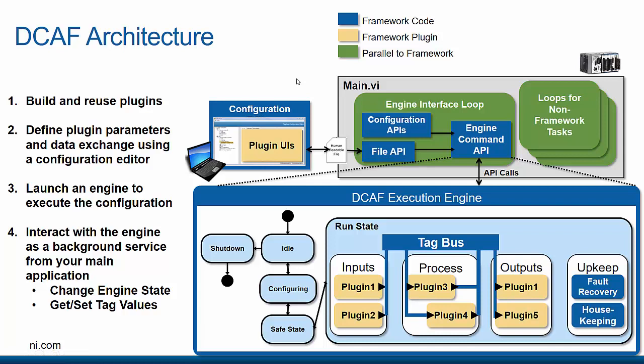Let's walk through how all of this works. We start in the configuration editor, where we define the modules we're going to use in our system, the targets these modules will run on, and the mappings between modules to move data around. The output of the configuration editor is a human-readable XML file that can be transferred to the execution target. This configuration file contains almost everything necessary to control the operations of our system. If you want to change what your system does, you change this one configuration file, deploy it to the system, and it's good to go — no code edits required, unless you're adding additional modules, in which case editing a single VI is required.